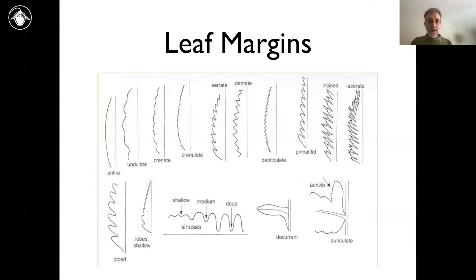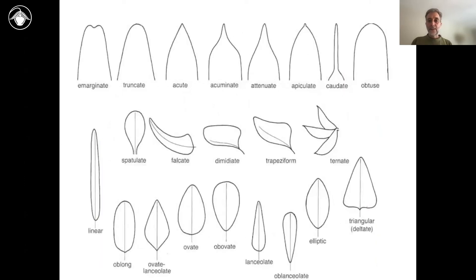Leaf margins have their own terms, very similar to the ones you would use for angiosperms — you can always look them up and they are very useful. Leaf shapes and leaflet shapes are also helpful to describe. One particularly useful fern term is what's called dimidiate — that's where the leaf is strongly asymmetrical, with the midvein very close to one edge of the leaf or leaflet as opposed to the other edge.